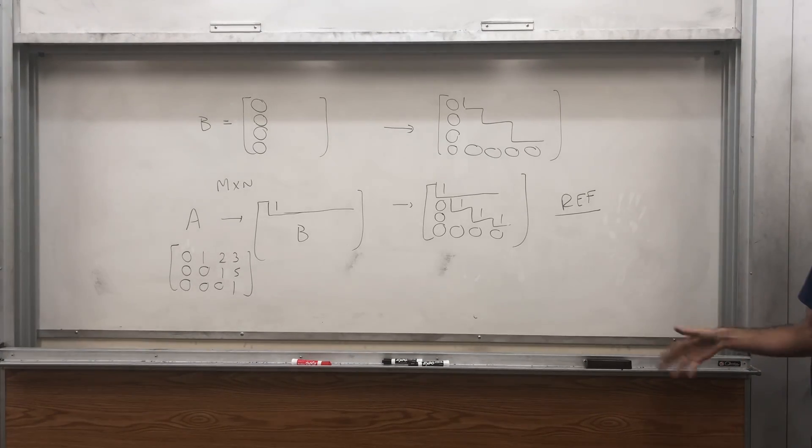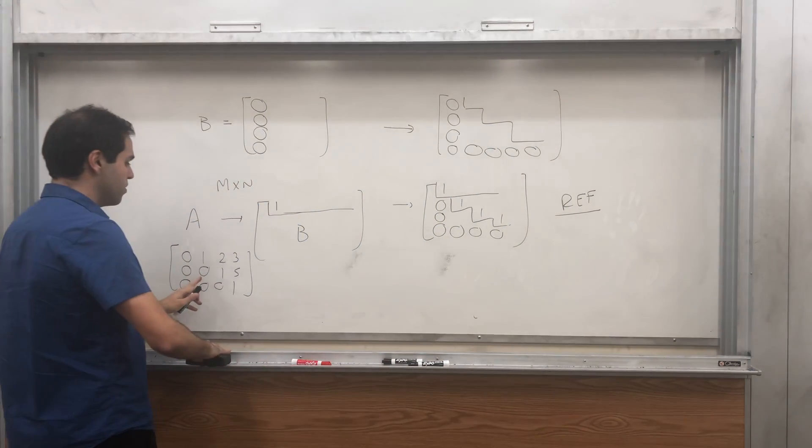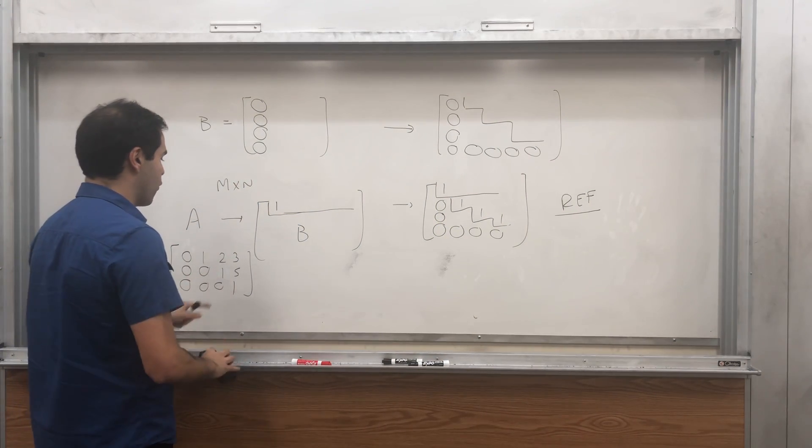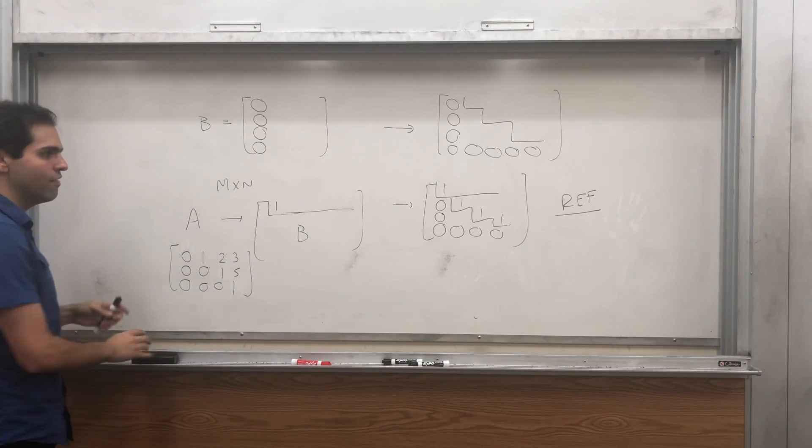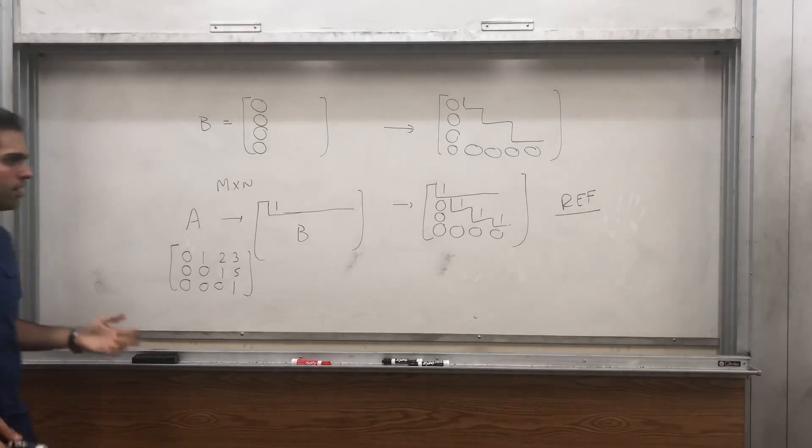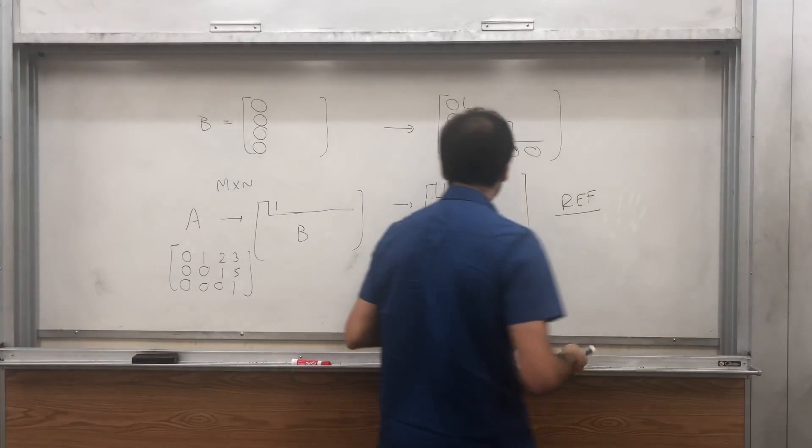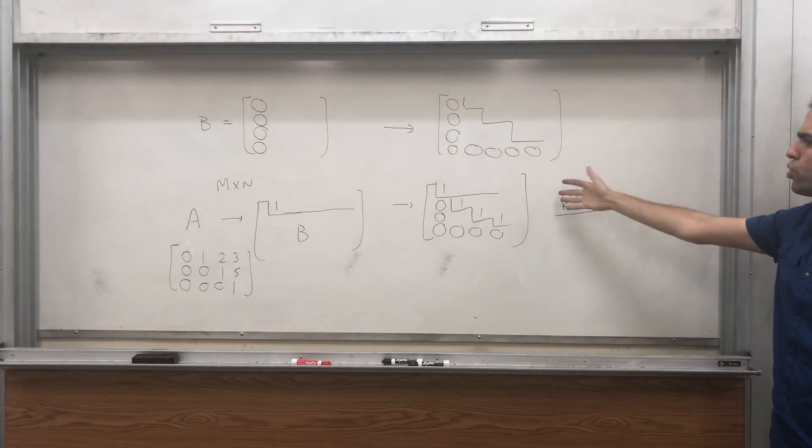And then the next requirement is simply that everything in a pivot column, like here, the second, third, and fourth column, has to be zero, except for the pivots. But that's also not too bad, because I guess technically you can use kind of an induction on the pivot columns, or just do it directly.